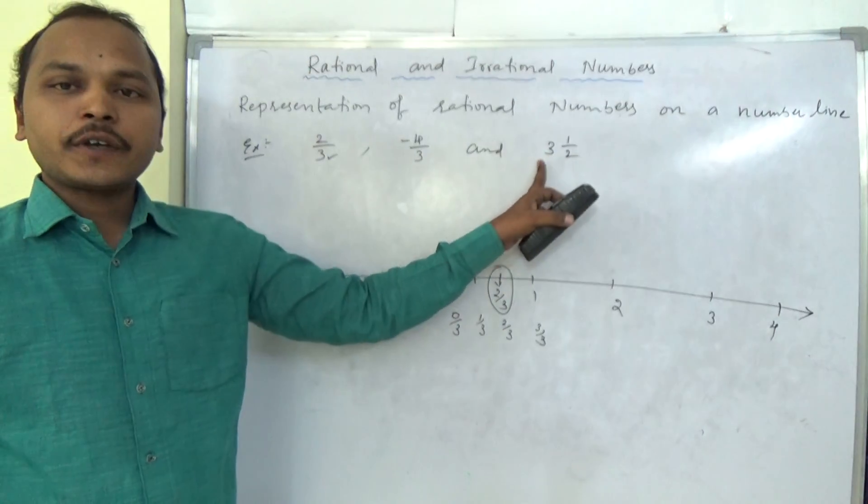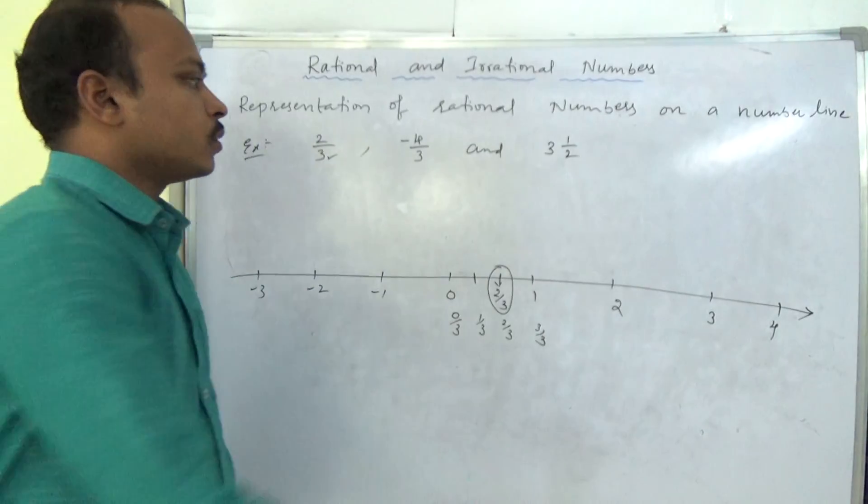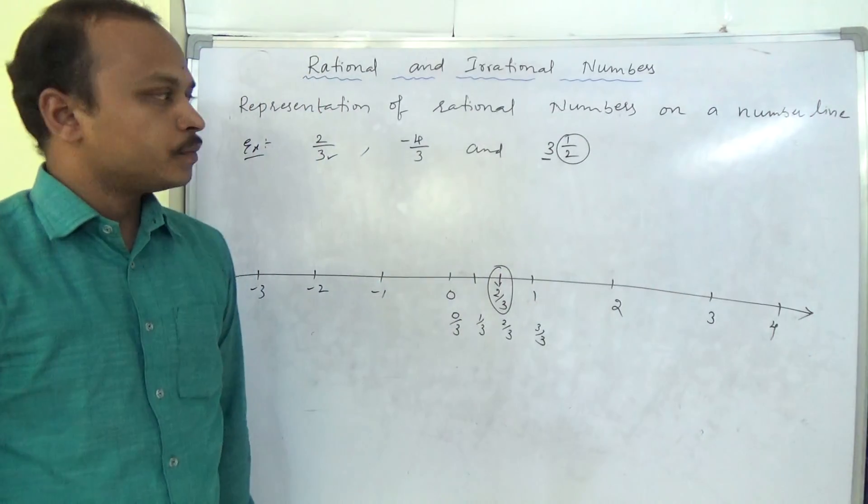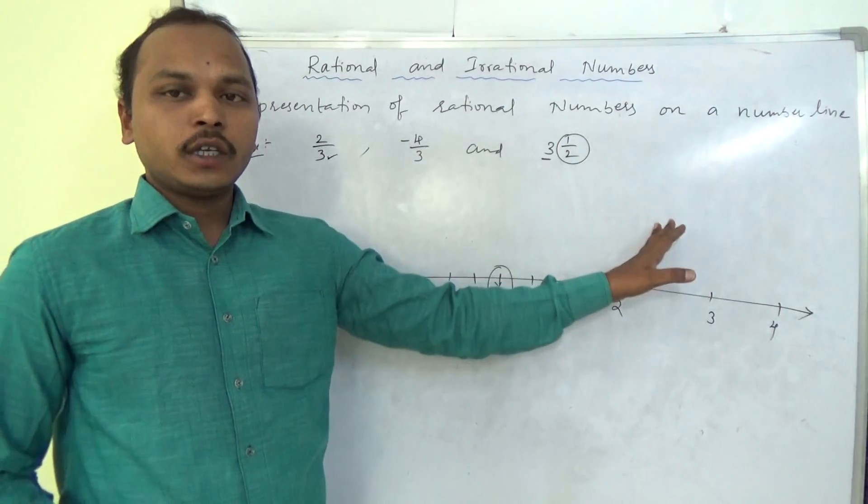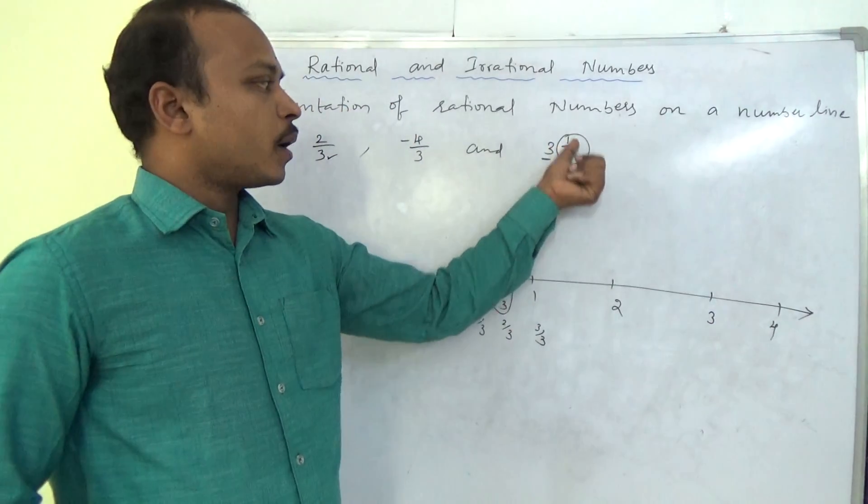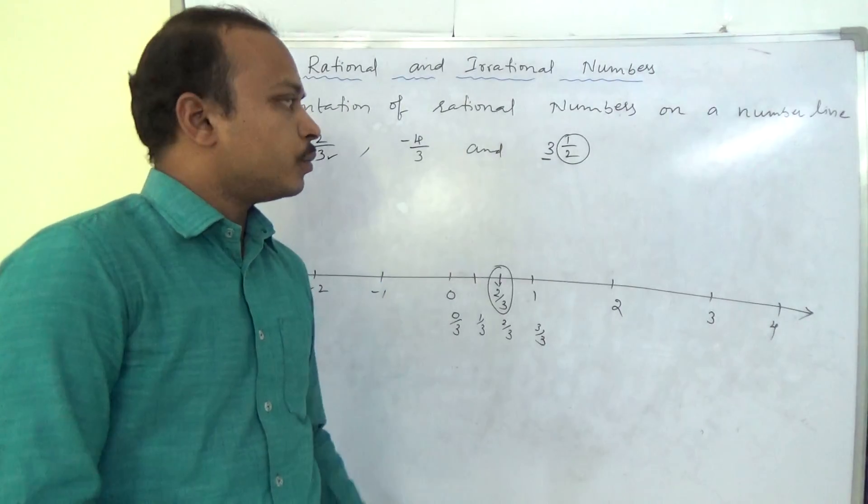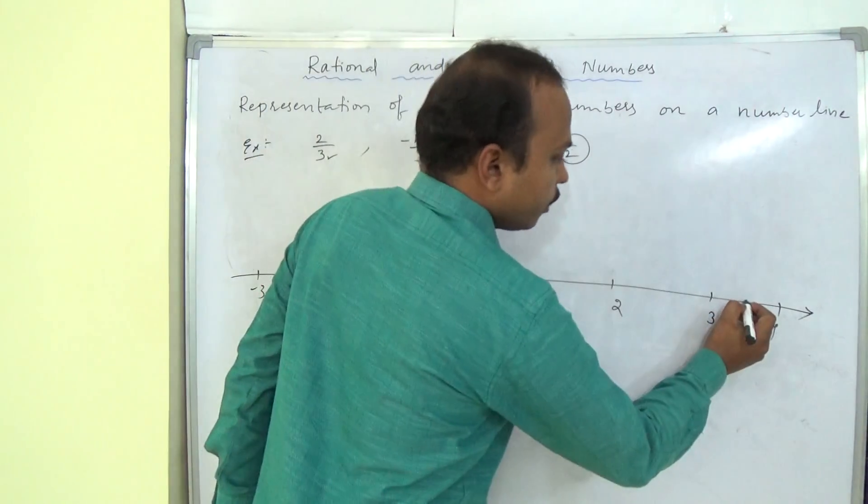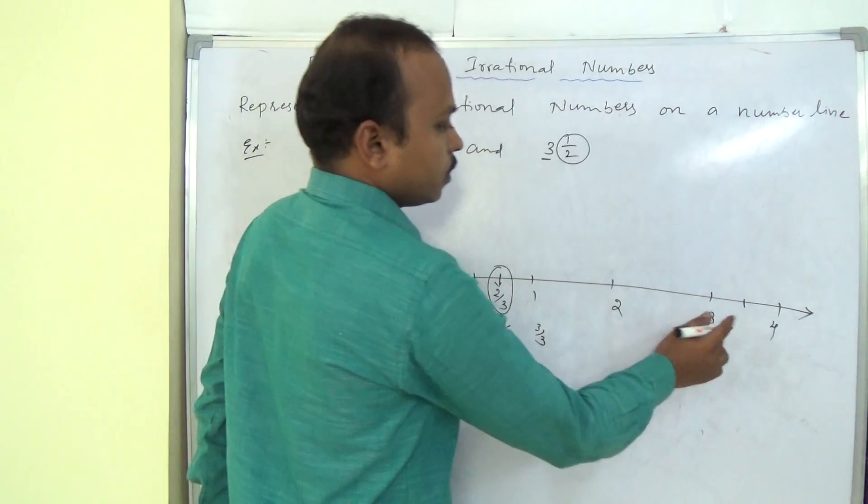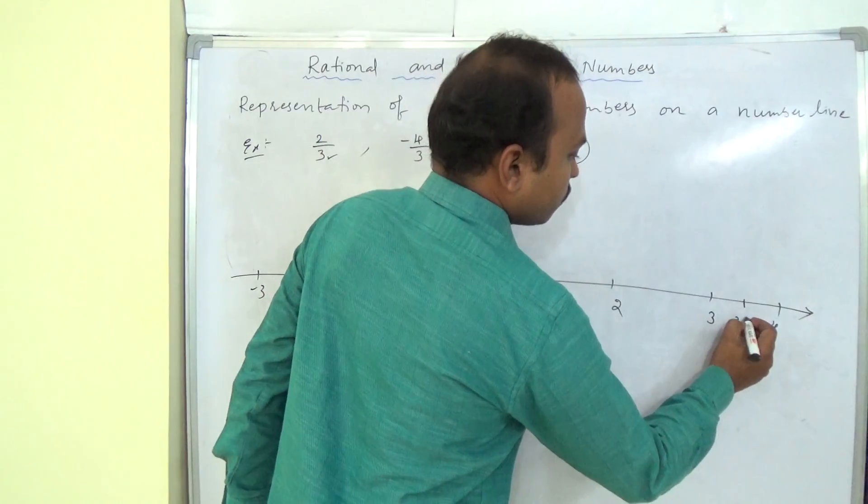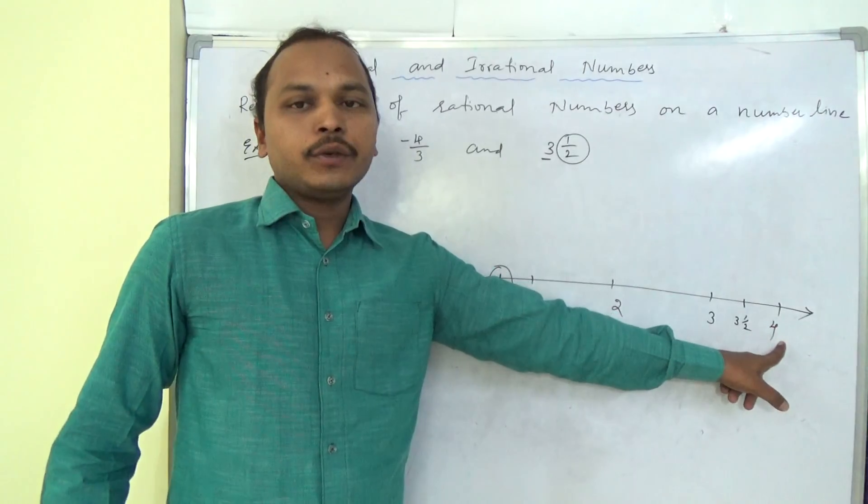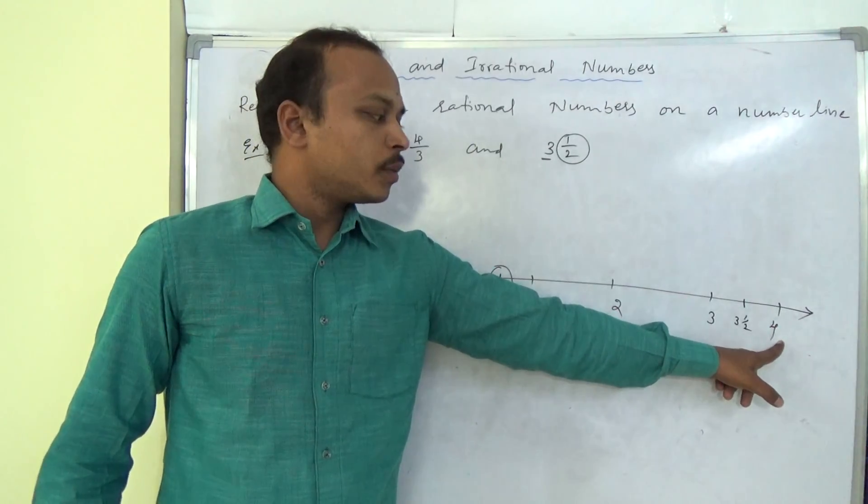We will see once this is our mixed fraction also. 3, 1 by 2. 3 is integer and 1 by 2 is the fraction. So 3, 1 by 2, it must be more than 3 and less than 4. So between 3 and 4, half part I have to make. So 1 by 2. Denominator is 2, so I need to make 2 equal parts. Now, this is 3, 1 by 2. 3, 2 by 2. 2 by 2 is 1. 3 plus 1 is 4 will come again.